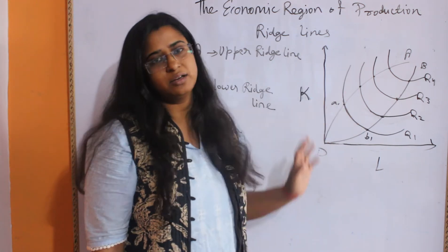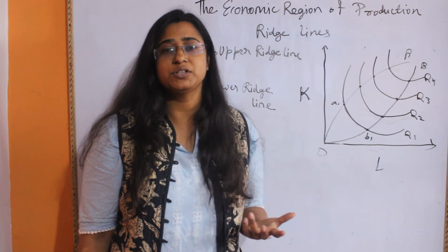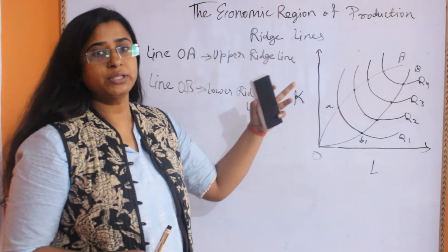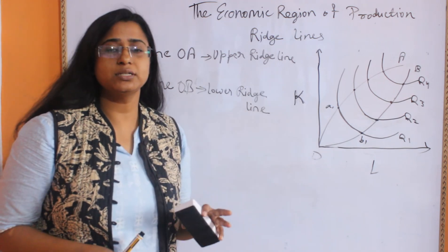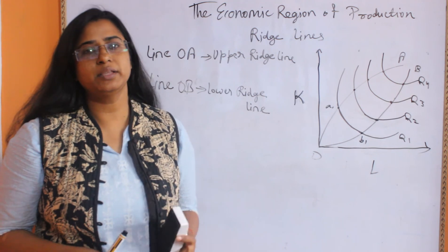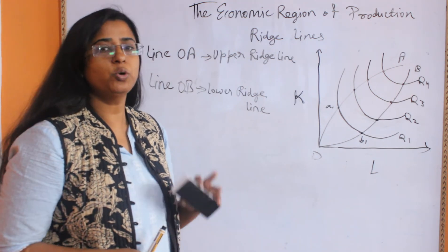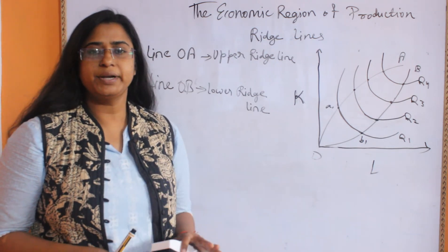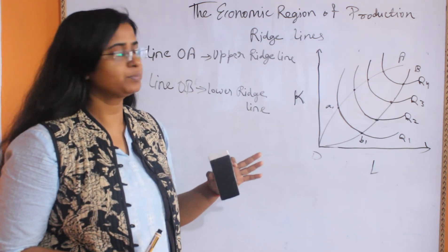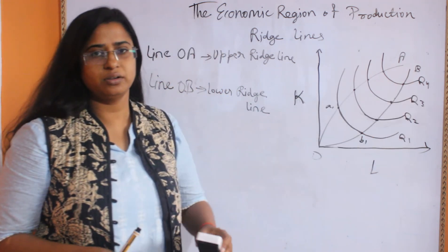This is the ridge line and its due for a producer. The points above the upper ridge line and the region below the lower ridge line is called the region of economic nonsense. That means no producer will operate in this area or this area.